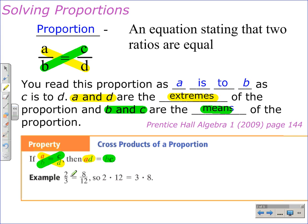In this numerical example, we have 2 over 3 equals 8 over 12. We know they're equivalent fractions. So when we do the cross products, or the means and the extremes, the extremes in this case are 2 times 12. The means in this case would be 3 times 8.